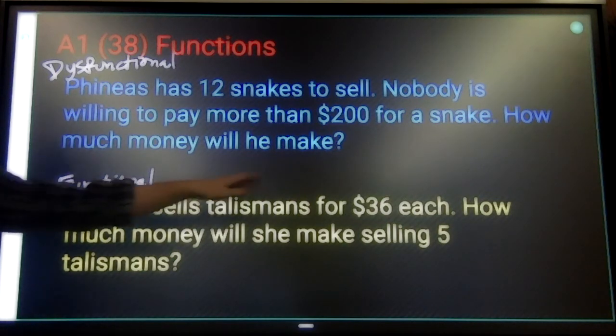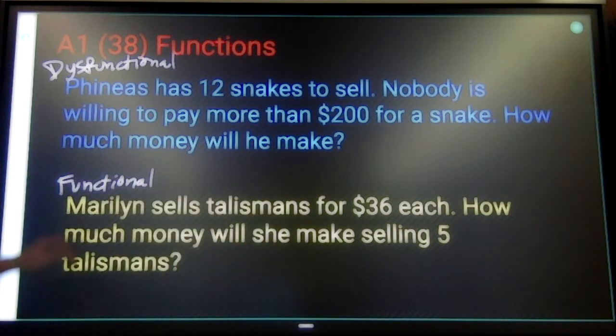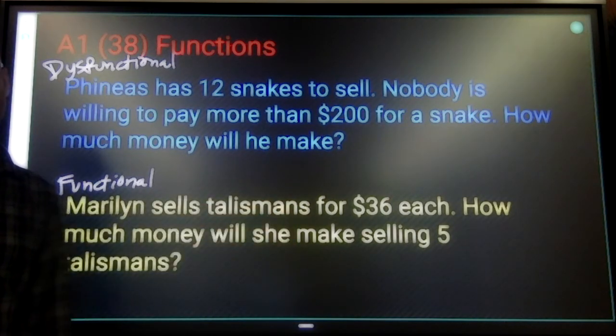Marilyn sells talismans for $36 each. How much will she make selling five talismans? There's only one answer to that. She's going to make 36 times five. $180.